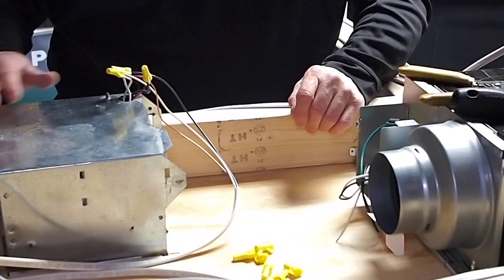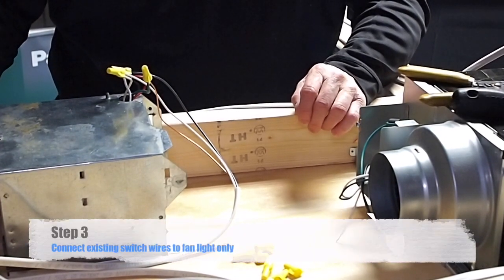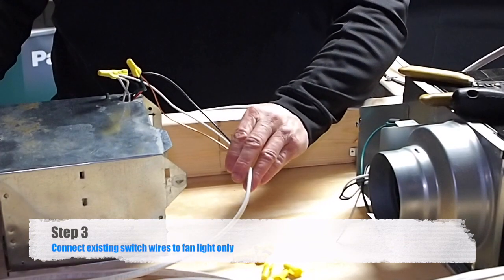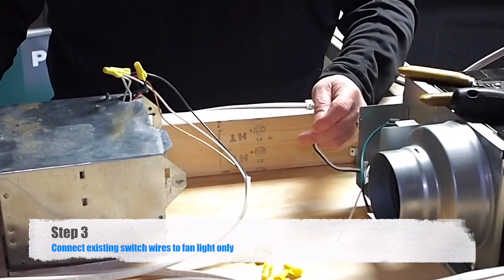We are back up here in the attic. This is the old fan that was existing in the house. We are going to now remove the wiring from it. And we are going to use this wire in the new fan to totally operate the light.